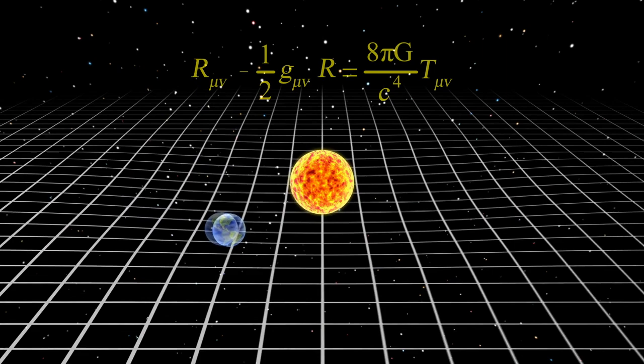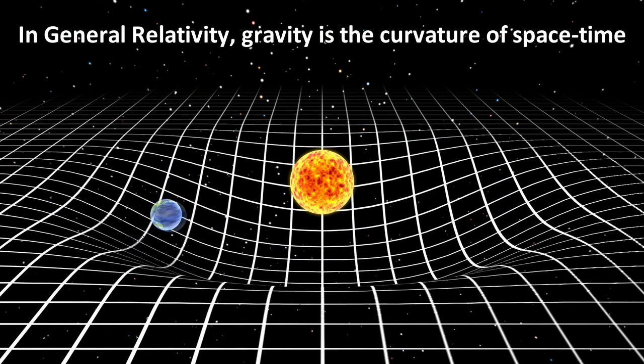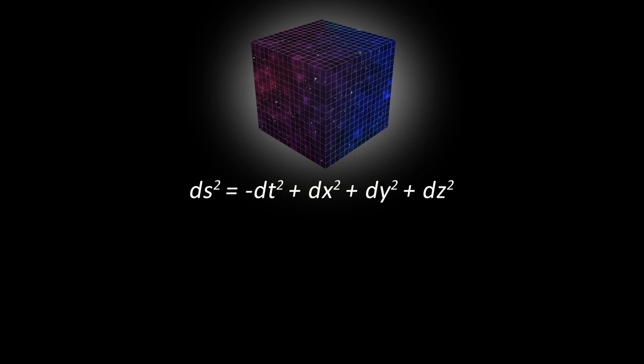The simplest spacetime is a flat spacetime. The equation for such a spacetime looks like this, where ds describes how a line moves or evolves in this spacetime. And all the terms with d and some components squared tells us what happens to these components of spacetime at different coordinates. Dt describes the time component, and x, y and z describes the three spatial components.